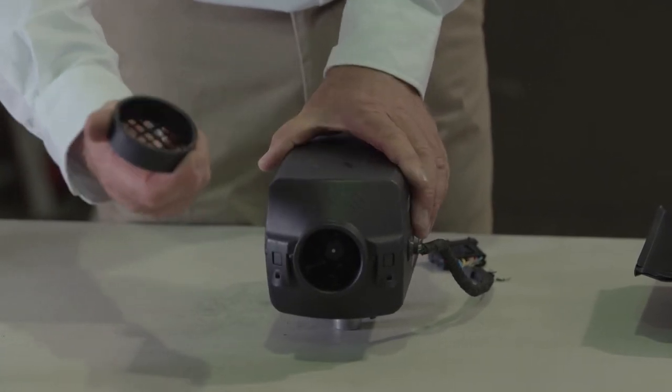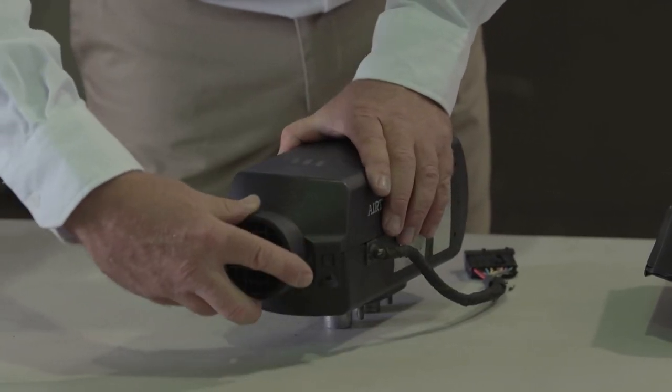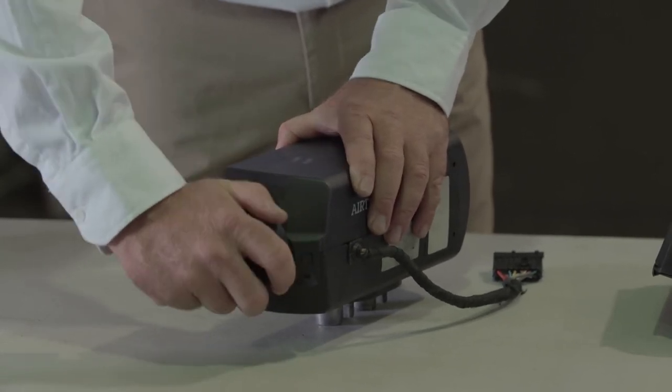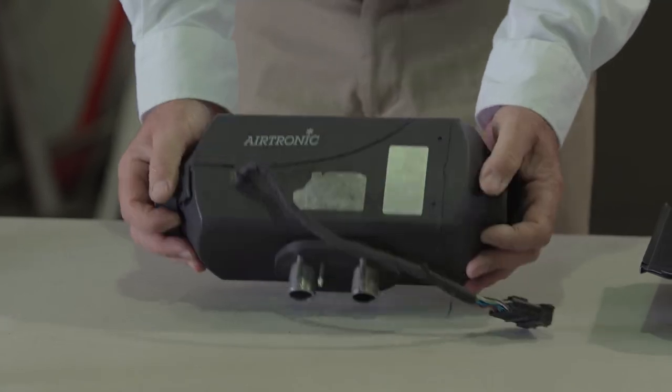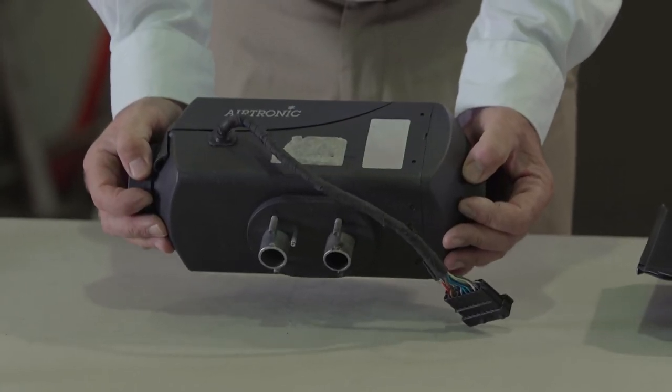The inlet grille is attached to keep fingers and debris out of the combustion air fan and heating air fan, and you reinsert it in the truck. Thank you very much.